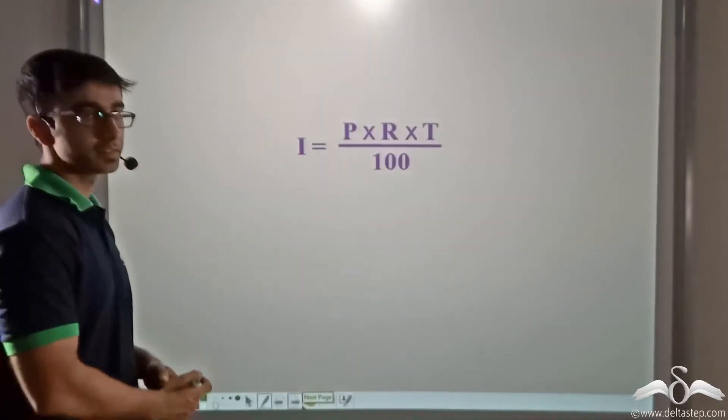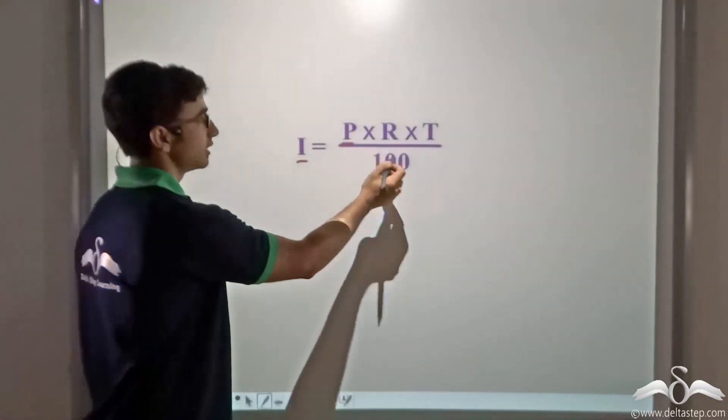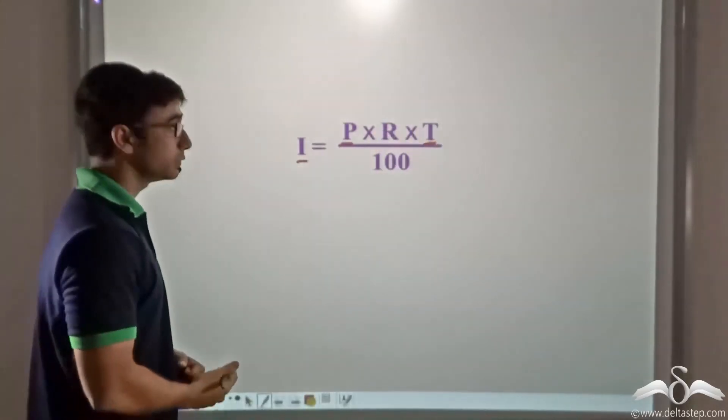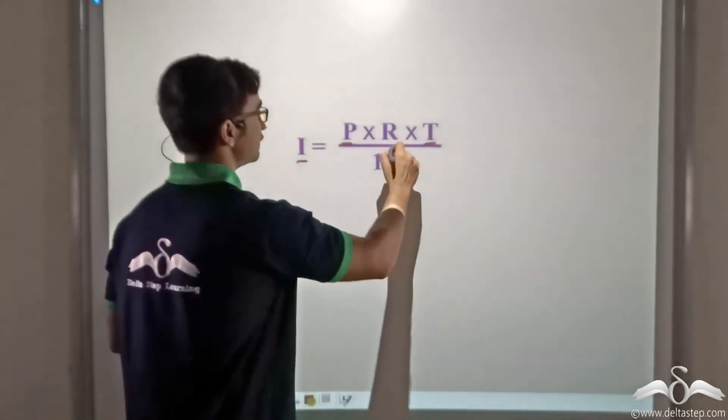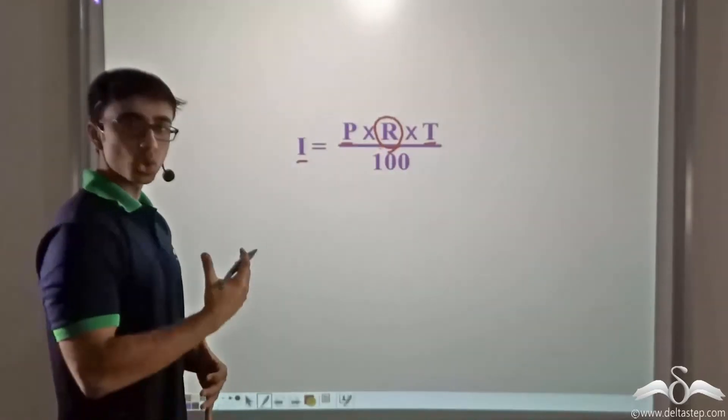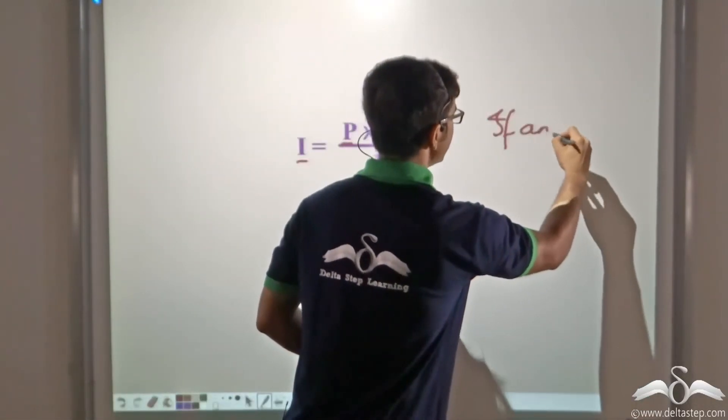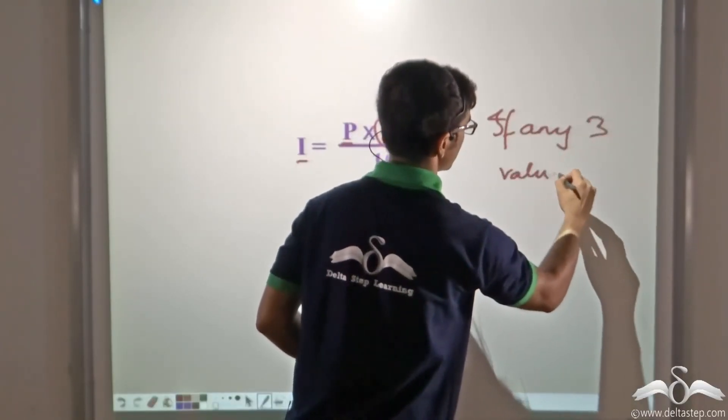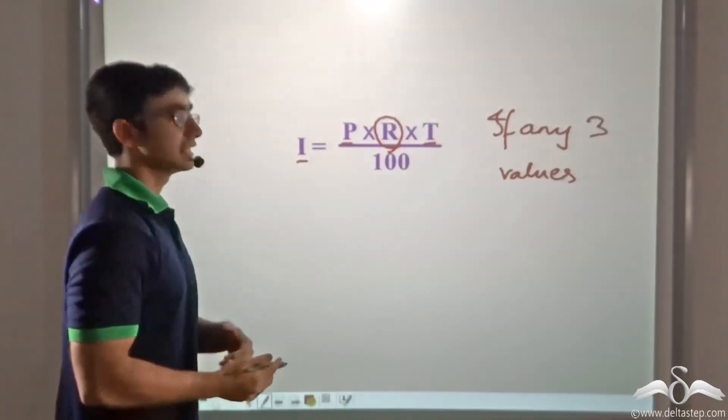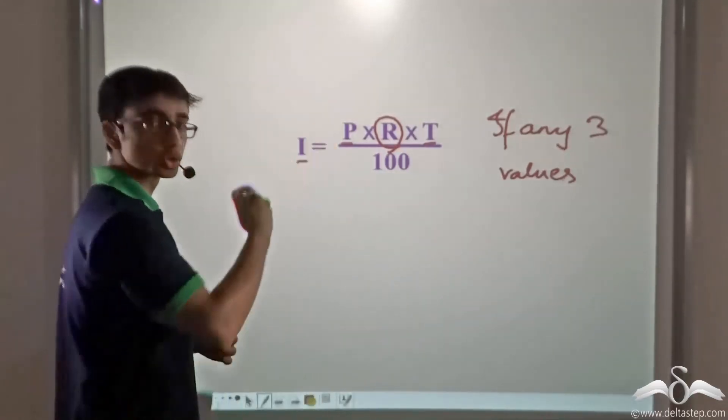So we found that if I, P, and T are known, then we can easily calculate the value of R. And not only that, if any three values are known to us, then we can calculate the fourth one.